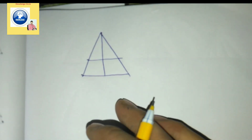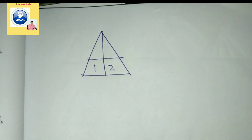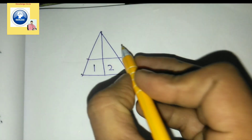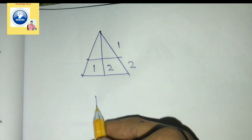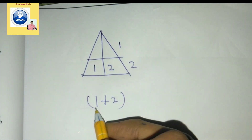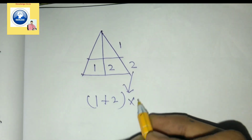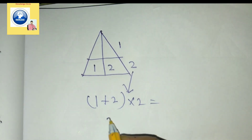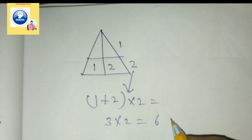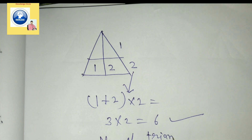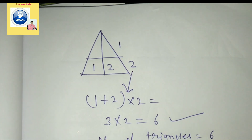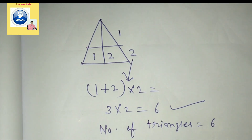If you have a question like this — with triangles pointing in different directions — how will you count them? Here there is figure one and figure two. What you do is add one plus two, then multiply by the number of sections, which is two: one plus two equals three, three times two equals six. So the number of triangles is six.